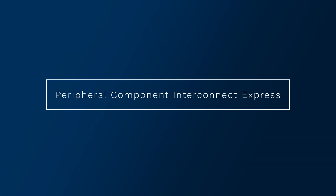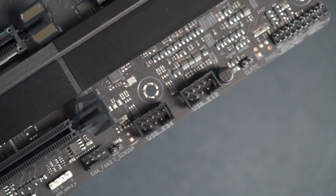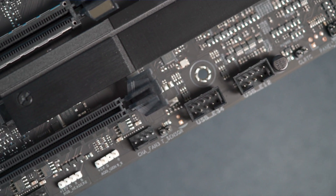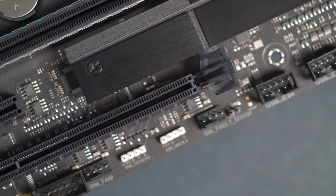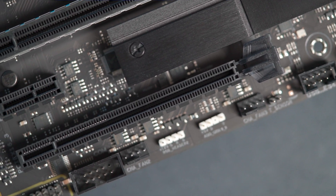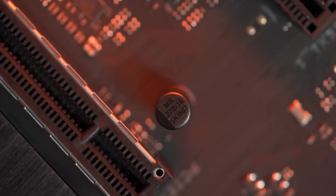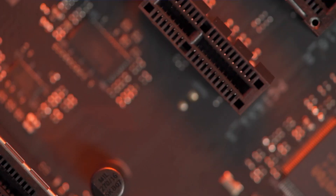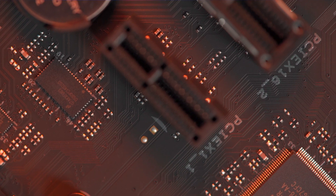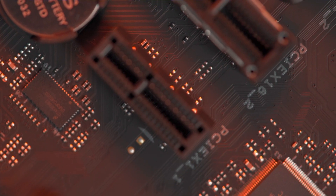PCIe stands for Peripheral Component Interconnect Express — a bit of a mouthful, hence why people just call it PCIe. PCIe is one of two mainstream interconnects for your motherboard, the other being USB. Just like USB, these ports allow us to connect various devices to our PC, but unlike USB, PCIe ports are located on the motherboard directly. The PCIe ports are most commonly used for devices like graphics cards, video capture cards, audio cards, network interface cards, and even SSDs.